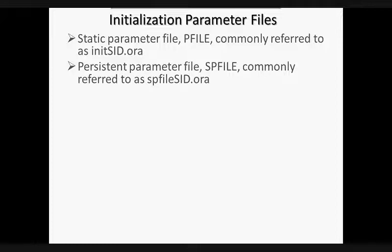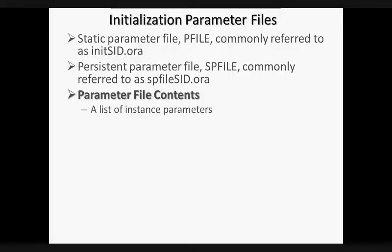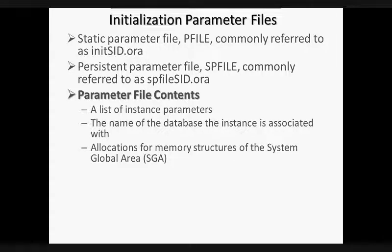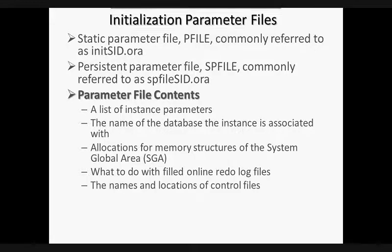The ALTER SYSTEM command is used to change the value of instance parameters. The parameter file contains various parameters and options, like a list of instance parameters required for instance startup, the name of the database the instance is associated with, allocation for memory structures of the system global area like their size, what to do with the filled online redo log files, the names and locations of the control files, and information on undo segments.